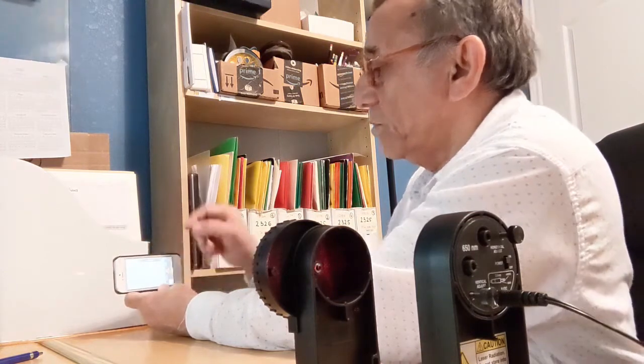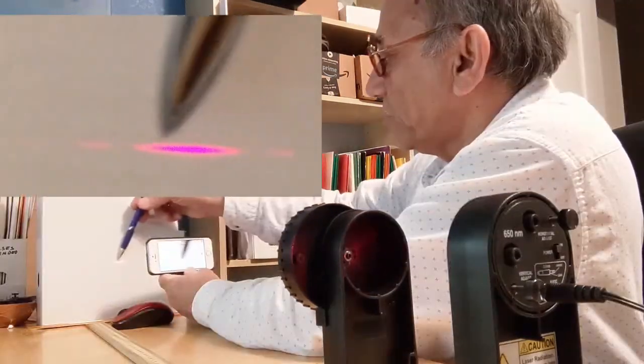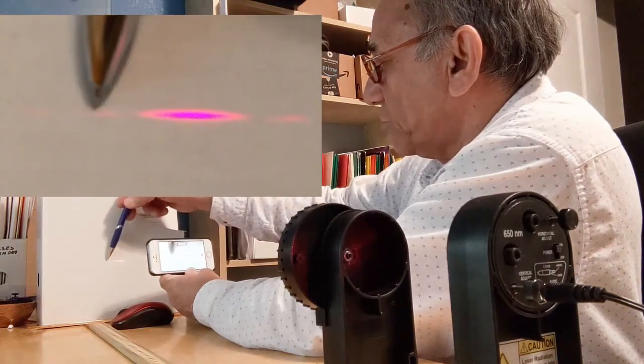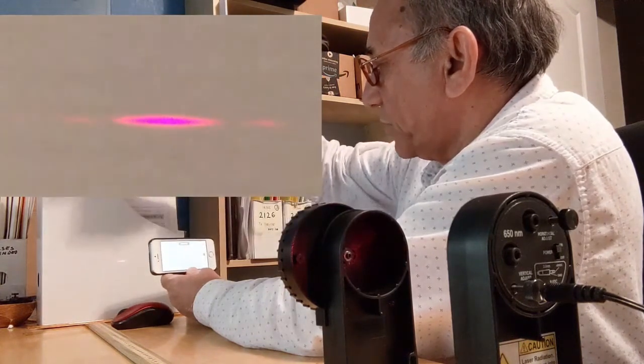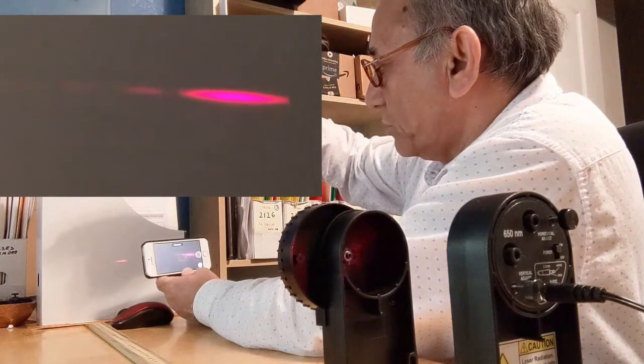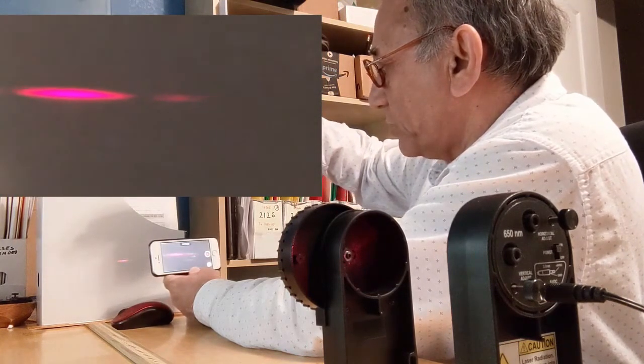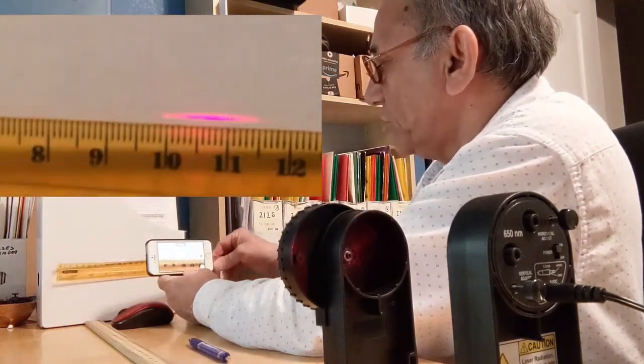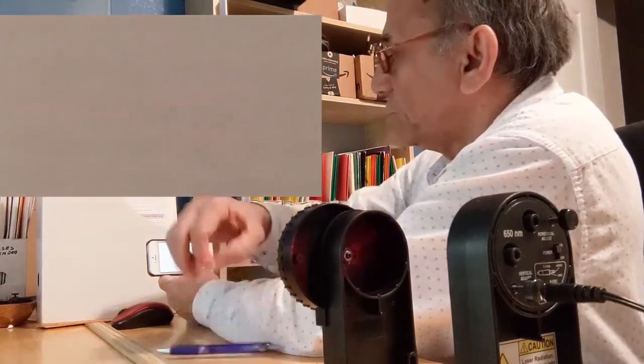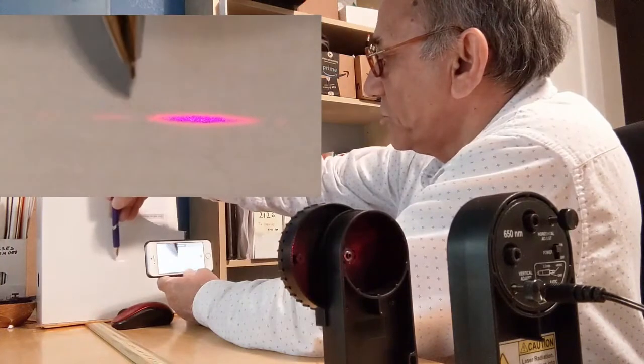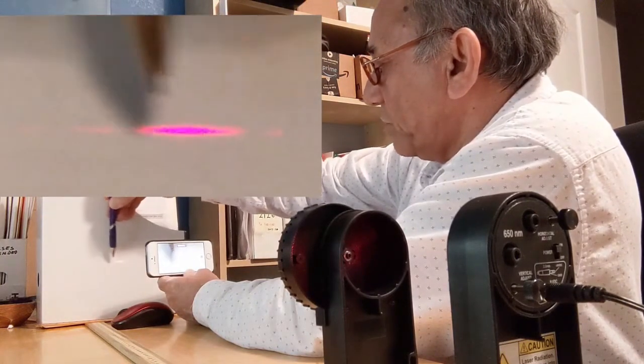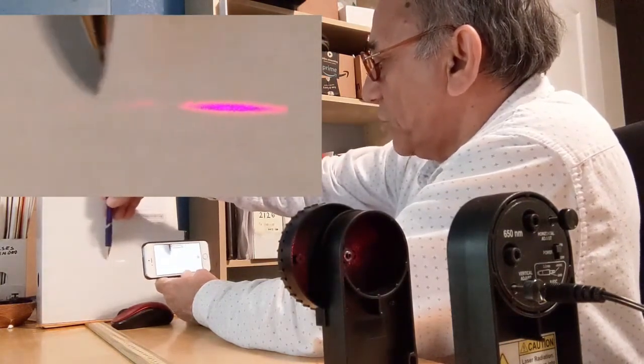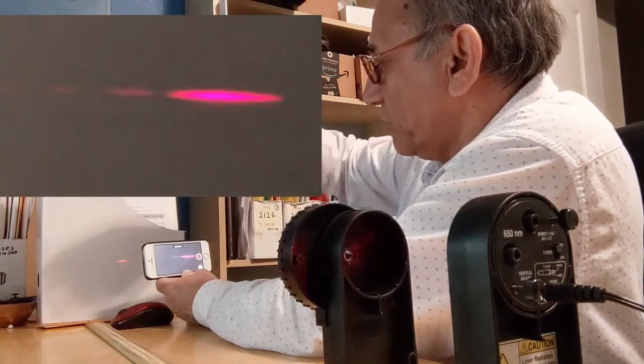Then we can see the diffraction fringe, main fringe here zeroth order and the first order fringes on either side. Cover it a little bit to make it dark, then you can see the higher order fringes. Now what you need to do is measure using the ruler, measure the distance from the first, but you can make it from here to here and divide by two, or measure from here to here and then divide by two and you get the appropriate values.